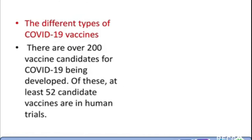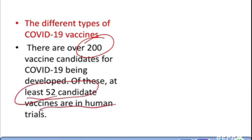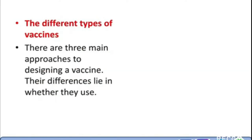Now let's understand what are the different types of vaccines developed all over the world for COVID-19 especially. Since COVID-19 was a pandemic, research was going on worldwide. There were almost 200 vaccine candidates for COVID-19 being developed, of which 52 vaccine candidates have gone for human trials. In developing these vaccines, there are three to five different approaches that can be used.